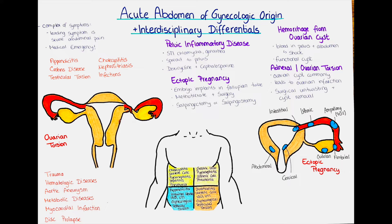Gynecologic causes for acute abdomen include pelvic inflammatory disease, ectopic pregnancy, hemorrhage from an ovarian cyst, and adnexal or ovarian torsion. Pelvic inflammatory disease is an infection that originates in the female reproductive system and then spreads into the pelvis. It is most commonly caused by the sexually transmitted bacterial infections chlamydia and gonorrhea, and is usually accompanied by fever, abnormal discharge, dyspareunia, metrorrhagia, dysuria, and severe bilateral abdominal pain. Treatment consists of empiric antibiotics, usually a combination of doxycycline and a cephalosporin.